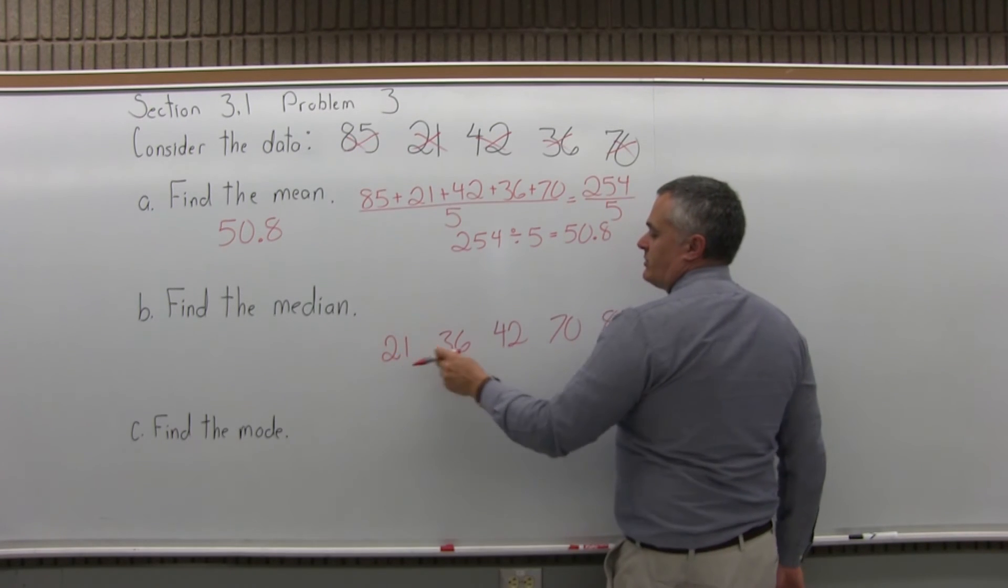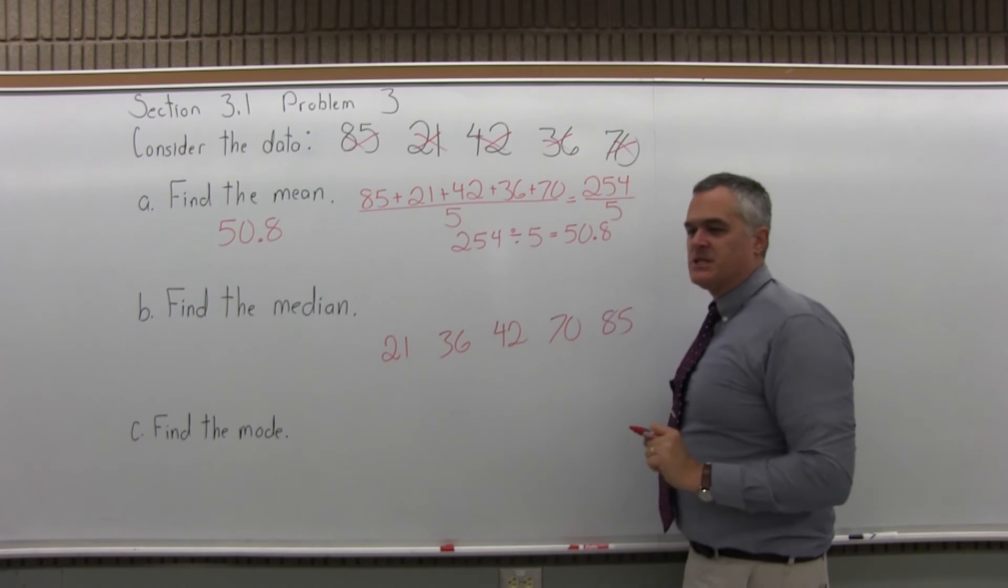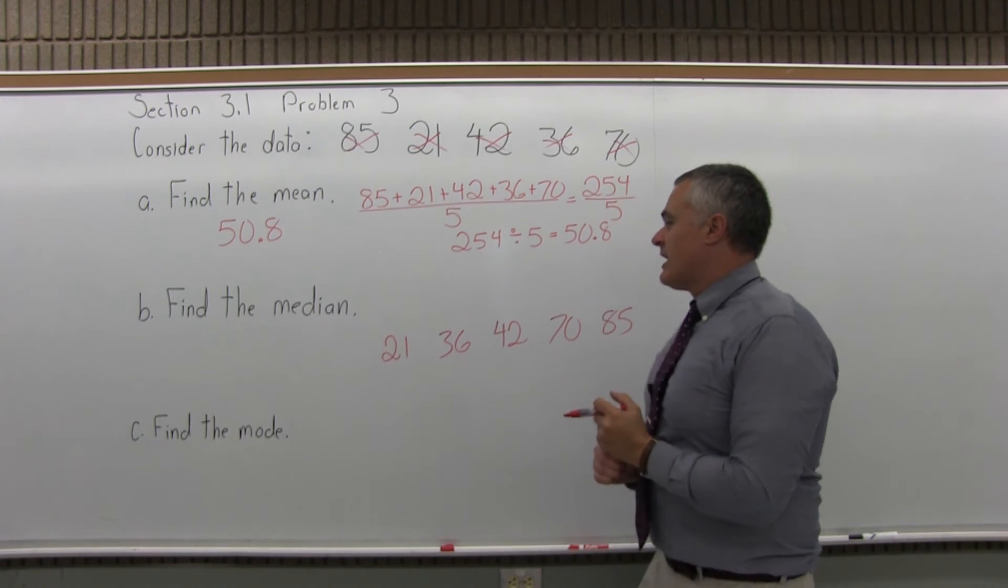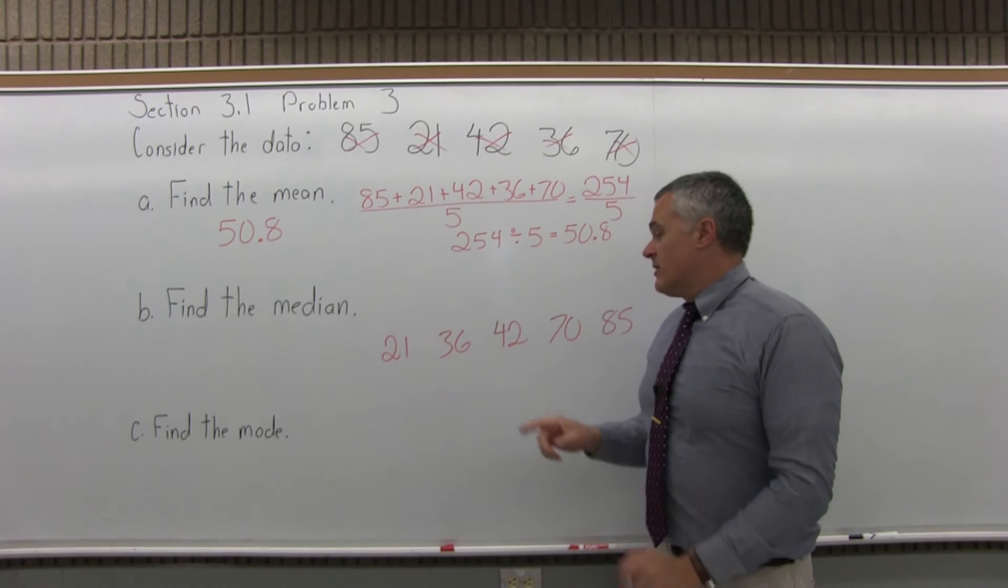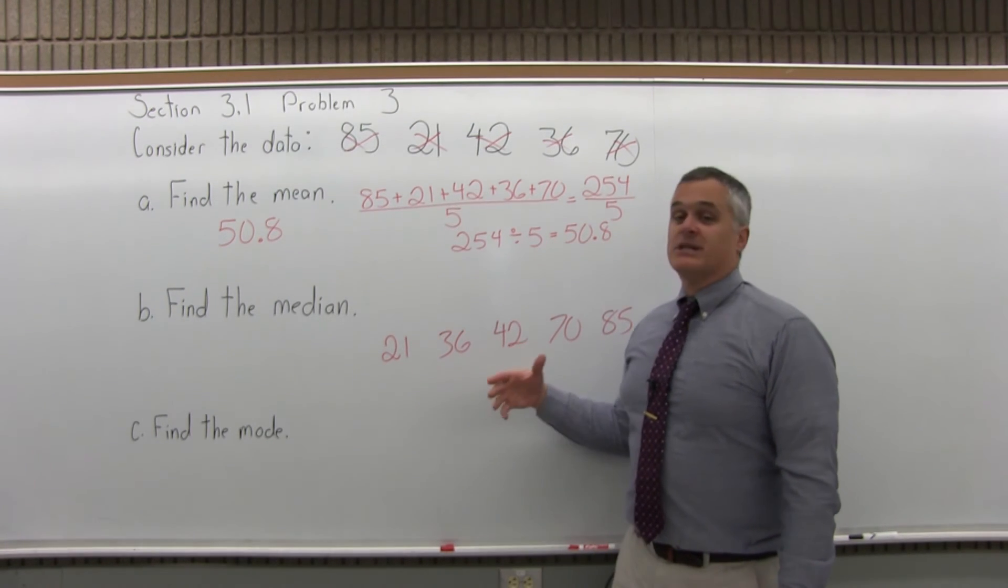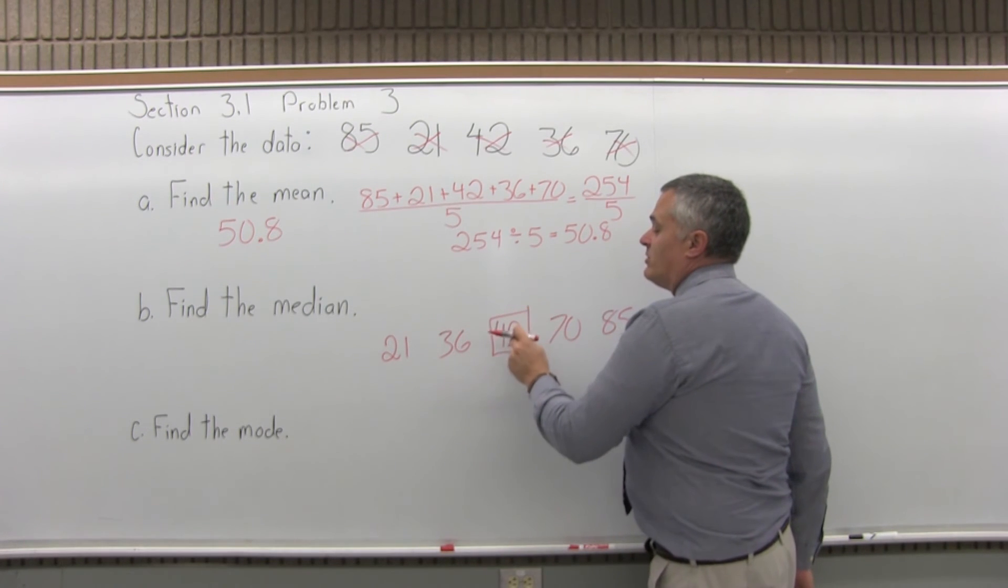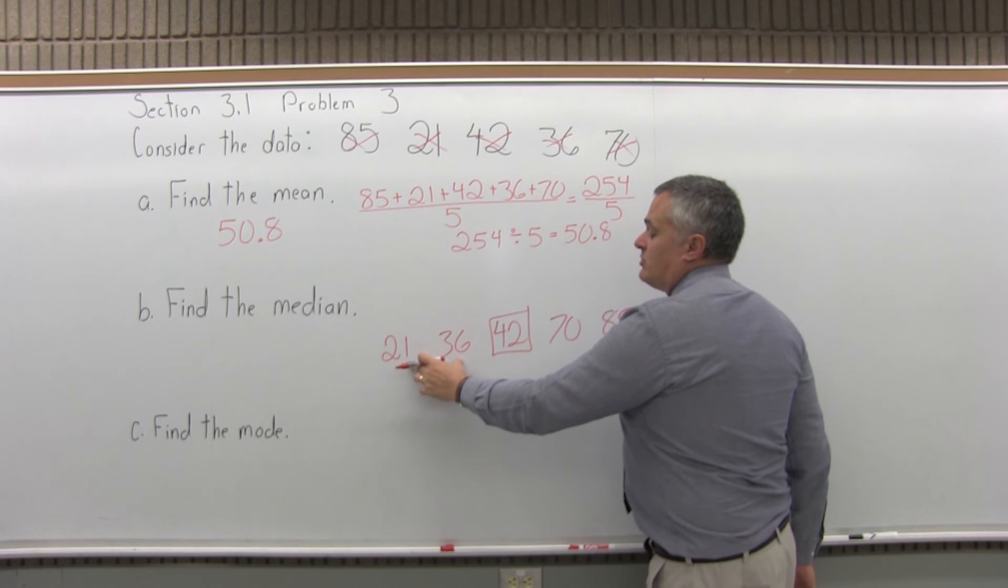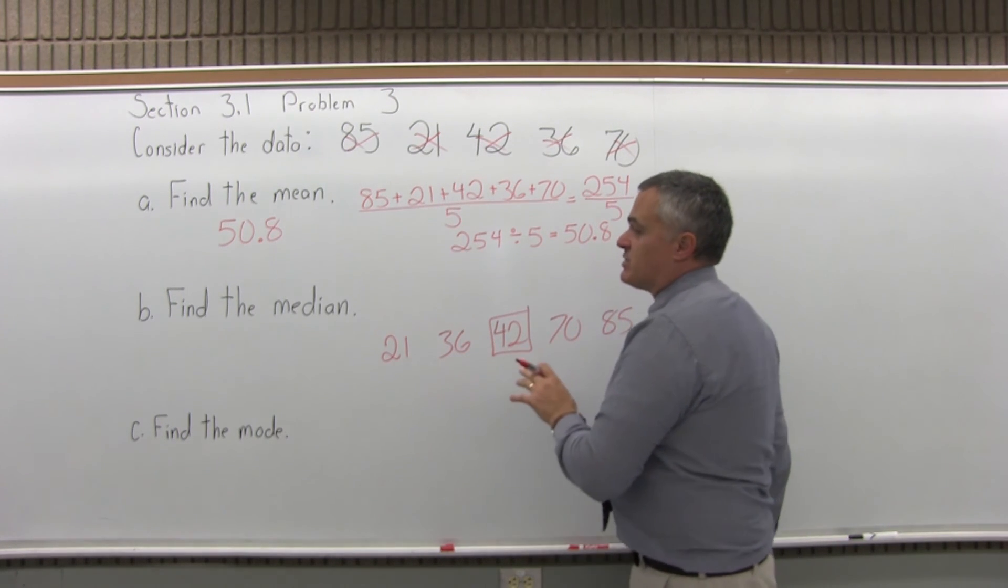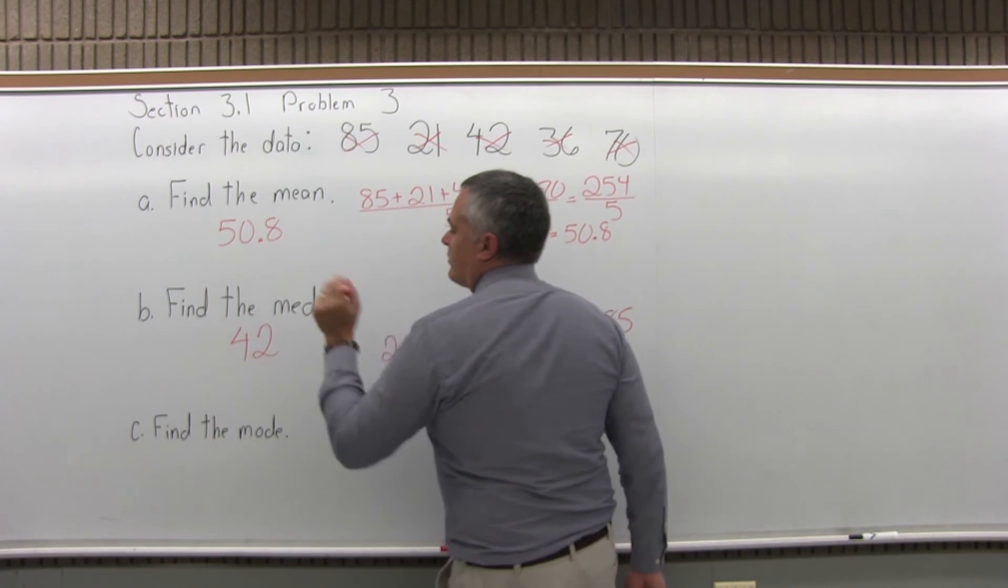And again, it's good to check, 1, 2, 3, 4, 5, just to make sure you don't miss any or double count any. Now that I have the list in order, I want to figure out if it's an even or odd amount of data. I have 5 data values. That's odd. So that's telling me there's going to be 1 data value right in the middle. The 42 is right in the middle. There's 2 data values smaller than the 42, 2 data values larger. That puts the 42 right in the middle. So the median is 42.